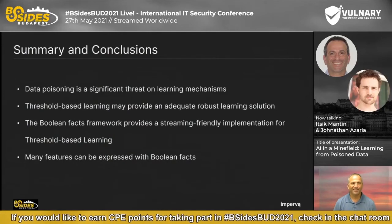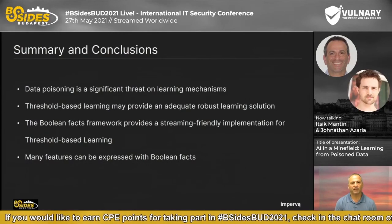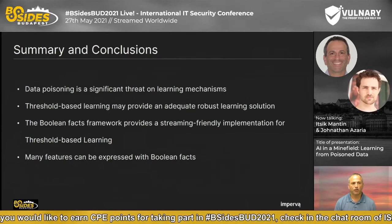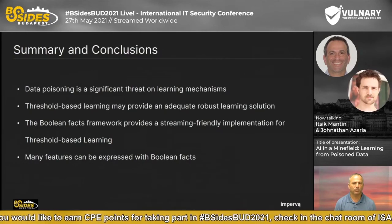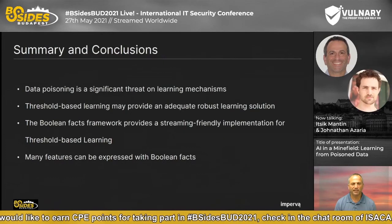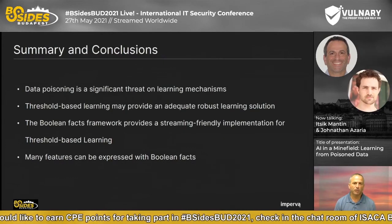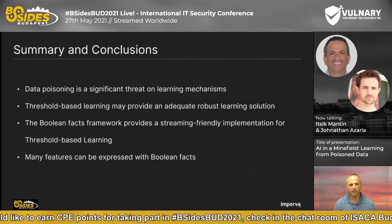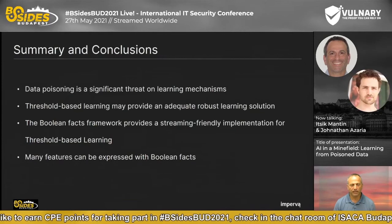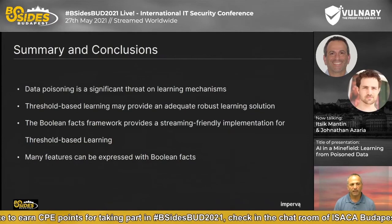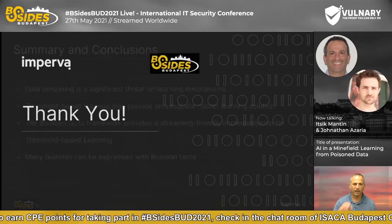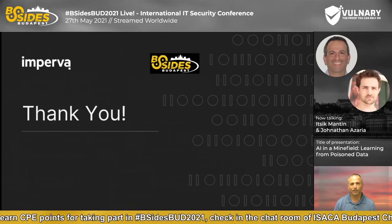Summary and conclusions: data poisoning is a significant threat on learning mechanisms. Threshold-based learning may provide an adequate robust learning solution. The Boolean facts framework we presented provides a streaming-friendly implementation for threshold-based learning, and although this framework at the beginning looks very limited, many features can be expressed with Boolean facts. Now we have a couple of minutes for questions.